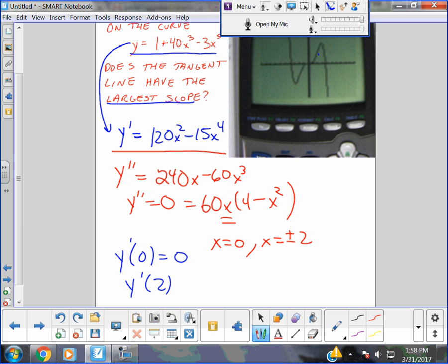And then we go y prime of two. And if I put two in there and I do some math, well, it's got a four times 120 is 480 minus 15 times 16. I don't know what that is. I'm going to grab a calculator. I'm lazy and I don't want to do it by hand. So, 120 times 2 squared minus 15 times 2 to the 4th, right? I get 240.